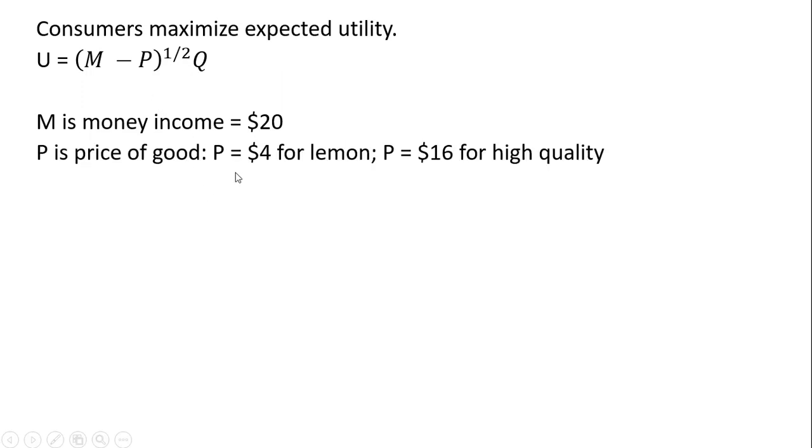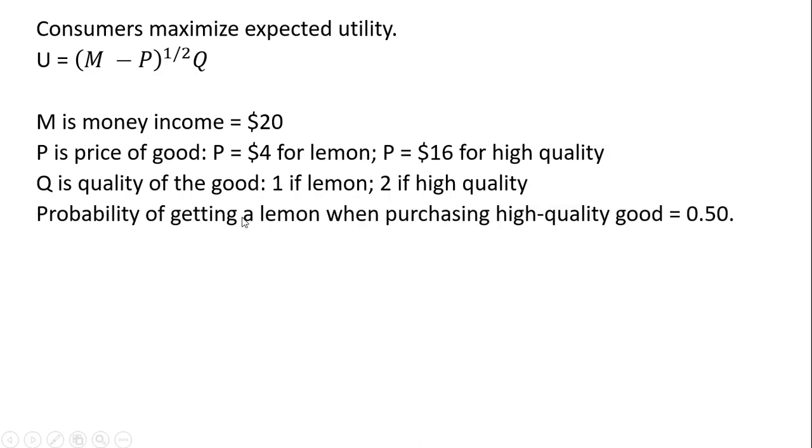Consumers are going to maximize expected utility. U = (M - P)^(1/2) * Q. M is money income, and we're going to assume that's $20. P is the price of the good. The lemons are priced at $4. High quality goods, based on their higher marginal cost, command a premium price of $16. And Q represents the quality. A lemon, a low quality good, has a Q of 1. A high quality good has a Q equal to 2. The probability of getting a lemon when purchasing a high quality good, let's assume, is 50%.